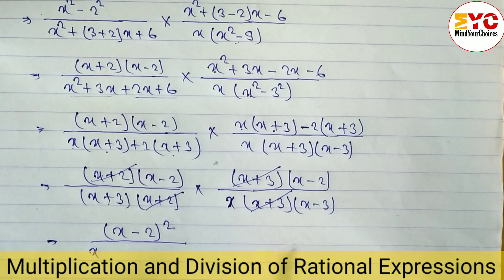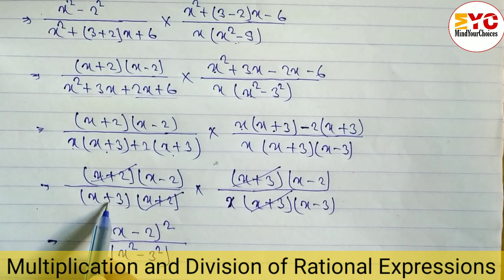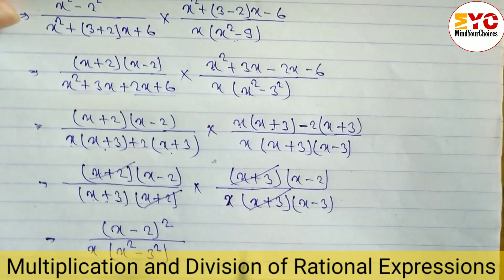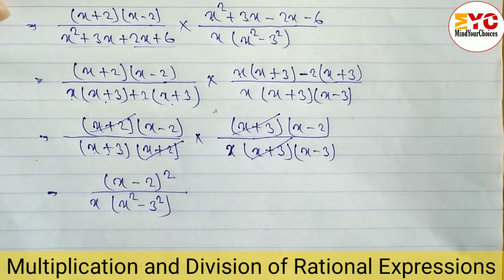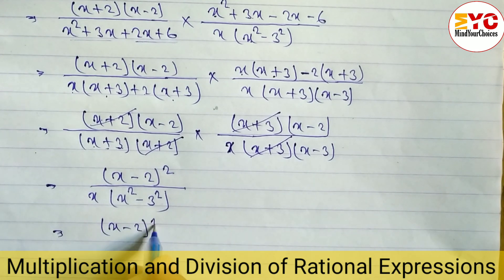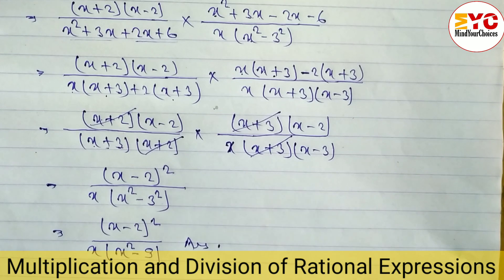In the denominator we also have (x plus 3)(x minus 3), which is in the form of (a plus b)(a minus b), so we can write it as a squared minus b squared: x squared minus 9, since 3 squared is 9. So the final answer is (x minus 2) squared divided by x times (x squared minus 9). This is the answer.